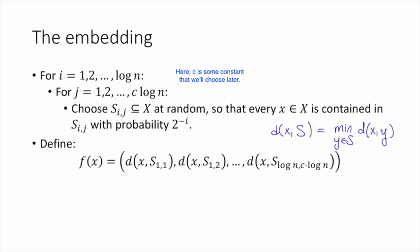I'll draw a picture of what's going on here in a moment, but the form of this might look familiar. It's similar to the embedding into L infinity that we saw in the previous video. In that embedding, we just mapped x to a vector that was the distance between x and all of the other points in the space. The difference here is that instead of looking at the distance to single points, we're looking at the distance to sets, and instead of looking at all of the sets, we're looking at some random collection of sets.